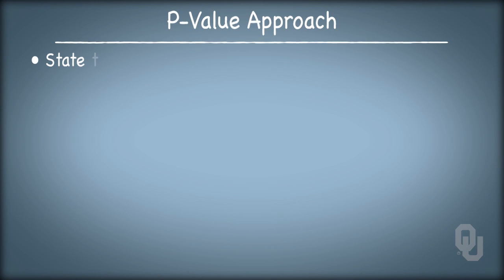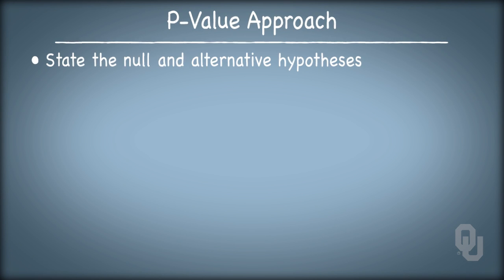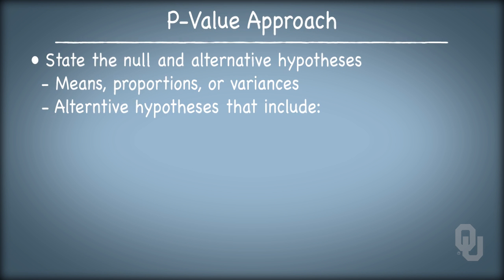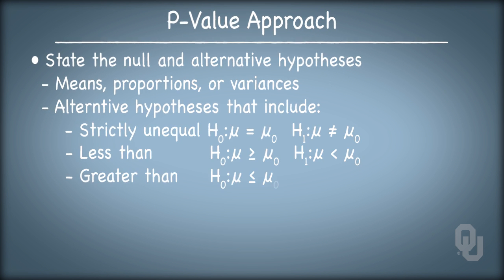First, we state the null and alternative hypotheses. We could be addressing hypotheses about means, proportions, or variances, or some other statistical question entirely, some of which we'll discuss later in the course. Depending on what kind of underlying question we're wanting to answer, the test could have alternative hypotheses that include strictly unequal, less than, or greater than.